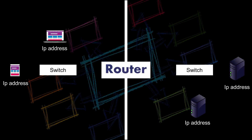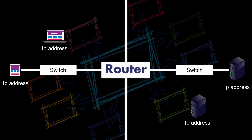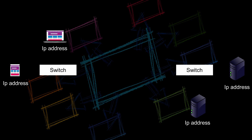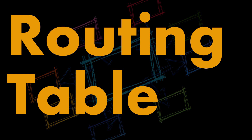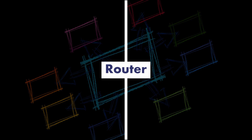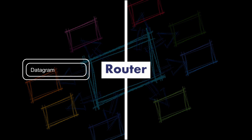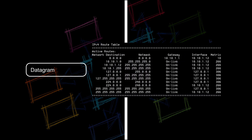A router usually sits at the edge of a network and acts as a gateway for incoming and outgoing traffic. Instead of sorting this traffic based upon MAC addresses like a switch, the router uses IP addresses, comparing them to a routing table to determine the next viable path. So if a datagram is destined for a device outside the local network, it is sent to a router where its packet is unpacked and its destination IP address is used as a guide to determine the next best path in the delivery process.